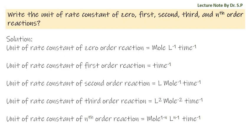If we put 3 instead of n in the nth order reaction unit, we will get the unit of third order reaction, and so on. In this way we can derive the unit of rate constant of any order reaction by using the unit of nth order reaction.